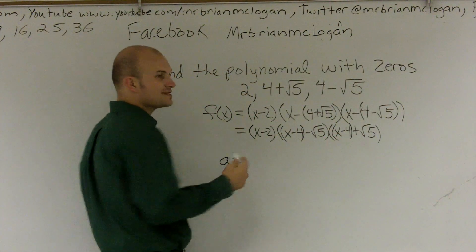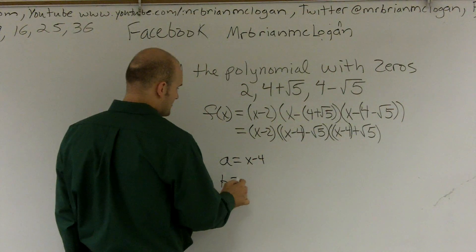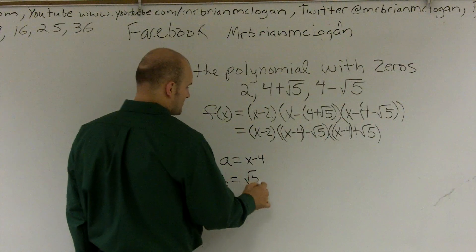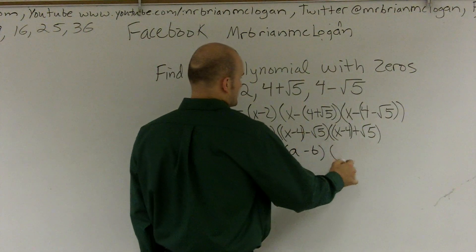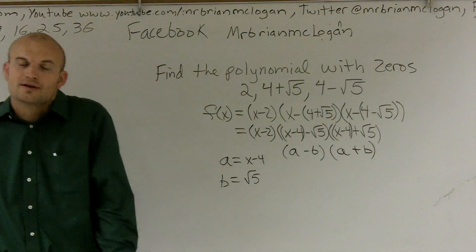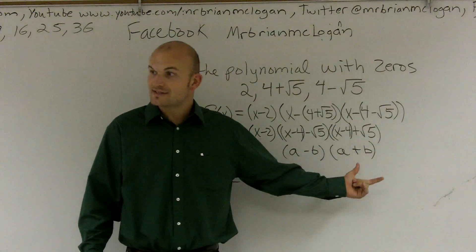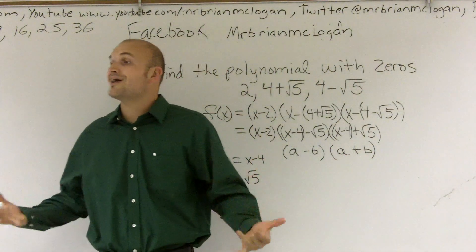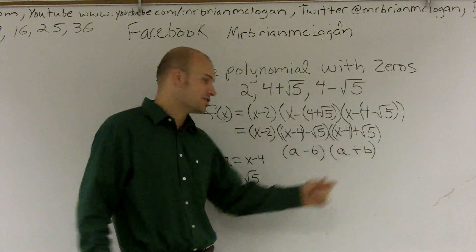Let's say, for instance, let's do this for fun. a equals x minus 4 and let's say for fun b equals square root of 5. Well, then I would have a minus b times a plus b. Suppose I substitute those in. Well, if I substitute those in, guess what this gives us? This gives us a difference of two squares, which is awesome.